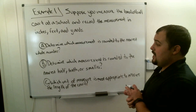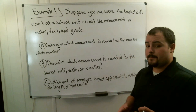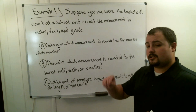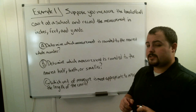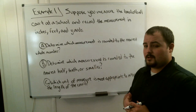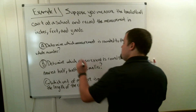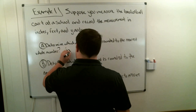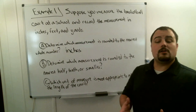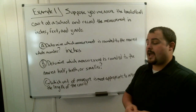The first question asks us to determine which measurement, when rounded to the nearest whole number, will stay the most accurate — the closest to the actual answer. If you're thinking inches, you're absolutely right. Part A: the answer is inches. If we measure in inches, we're very close to the actual size of a basketball court, and that's what we want.